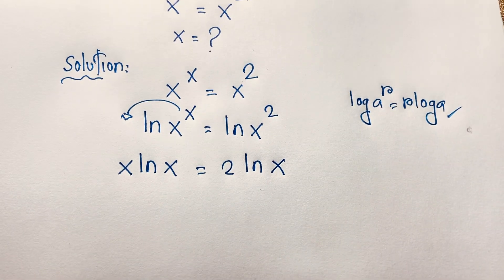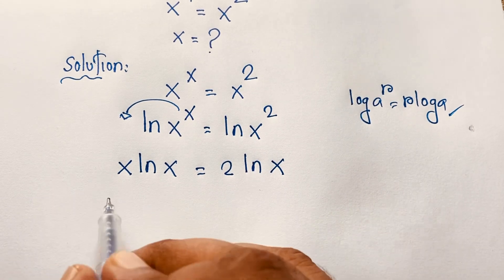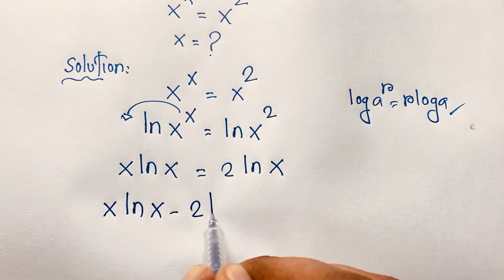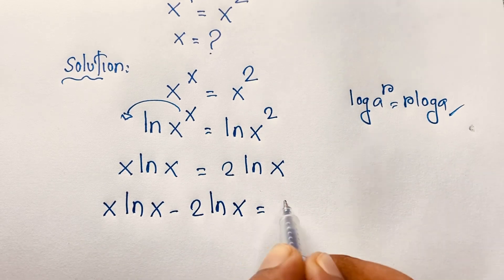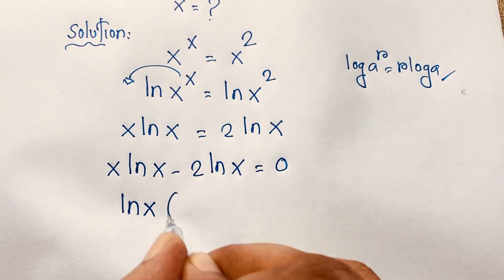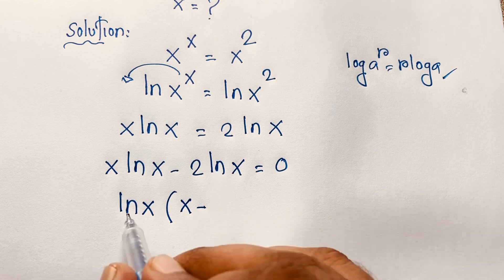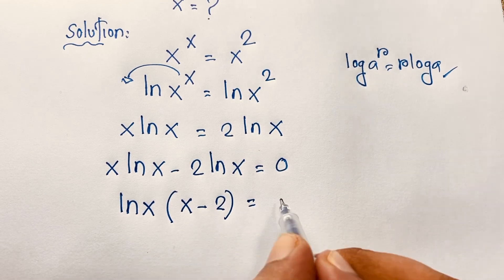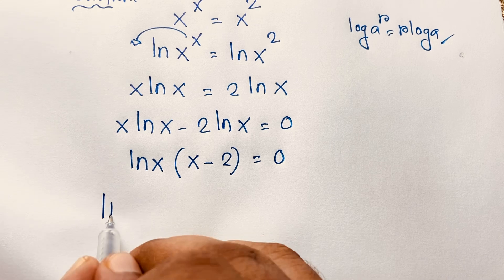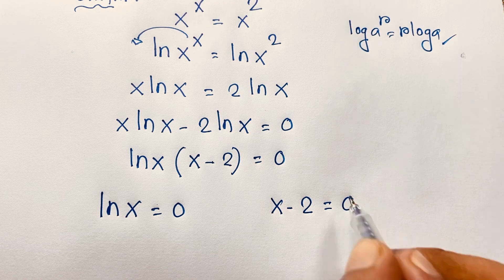Now if I move this value over, it becomes x·ln(x) minus 2·ln(x) is equal to 0. Here ln(x) is common, so if I factor out ln(x), I get ln(x)·(x − 2) = 0. This gives two cases: ln(x) = 0, or x − 2 = 0.